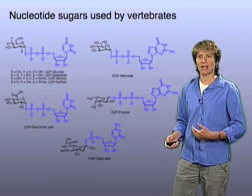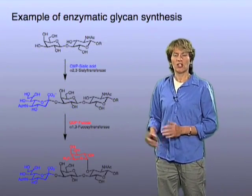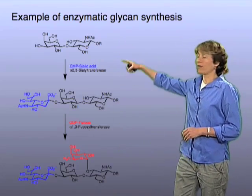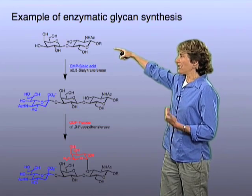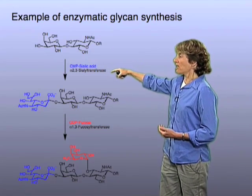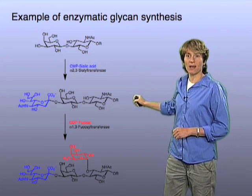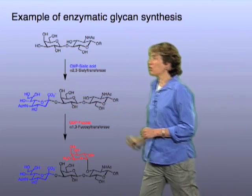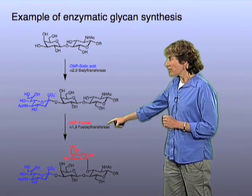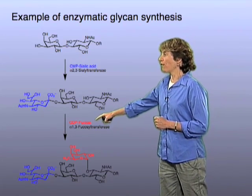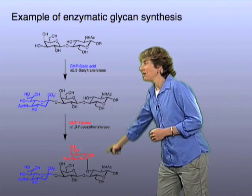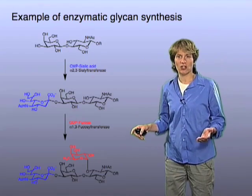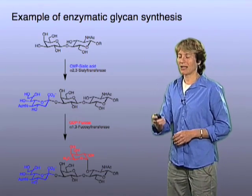These are the substrates made inside your cells and used by your enzymes. To give you a sense of how enzymes assemble a tetrasaccharide, here is a pathway found in vertebrate systems: a disaccharide is synthesized first, then a sialyl transferase takes sialic acid from CMP-sialic acid and transfers it onto this sugar, converting the disaccharide to a trisaccharide. Then a fucosyl transferase transfers fucose from GDP-fucose, converting the trisaccharide to a tetrasaccharide. This particular tetrasaccharide has some very interesting biological properties that will be discussed later in this lecture.